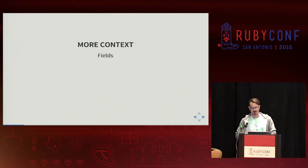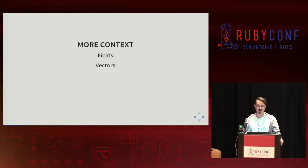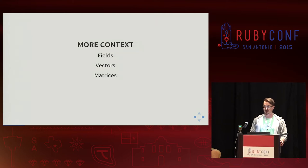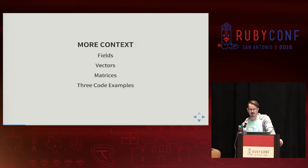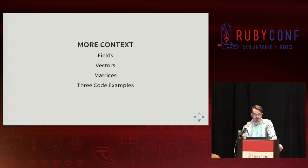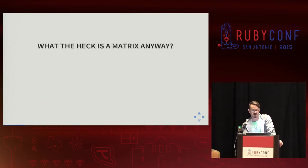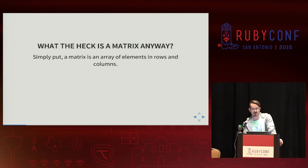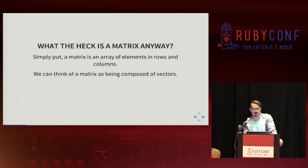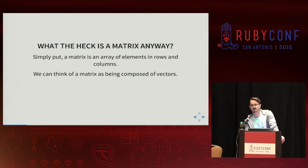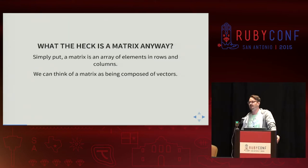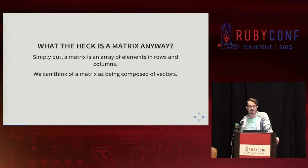To get more context on those, we're going to talk about fields, some of the mathematical concepts around fields, talk about vectors and matrices, and then go through three code examples. So what the heck is a matrix anyway? Simply put, it's an array of elements that have been organized into rows and columns. We can think of a matrix as being composed of vectors — a column in a matrix is a vector, and a row in a matrix is a vector.